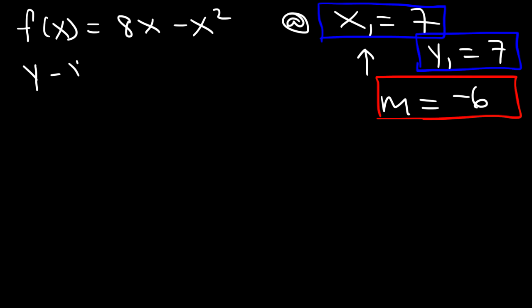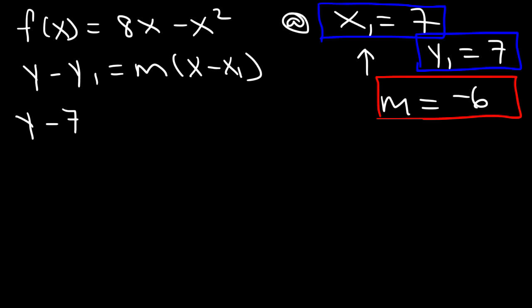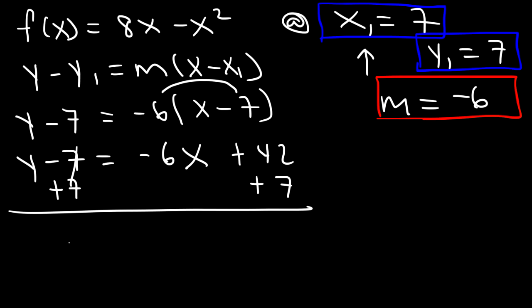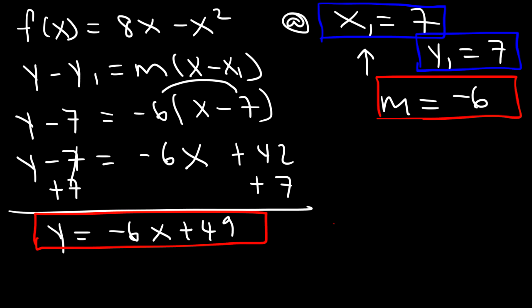Now let's use the point slope formula. y1 is 7, m is negative 6, x1 is 7. So y minus 7 equals negative 6 times x minus 7 — that's the equation of the tangent line in point slope form. But let's get it in slope intercept form. Distributing the negative 6 gives negative 6x, and negative 6 times negative 7 is positive 42. Then we add 7 to both sides, giving us negative 6x plus 49. This is the equation of the tangent line in slope intercept form — that's the final answer.